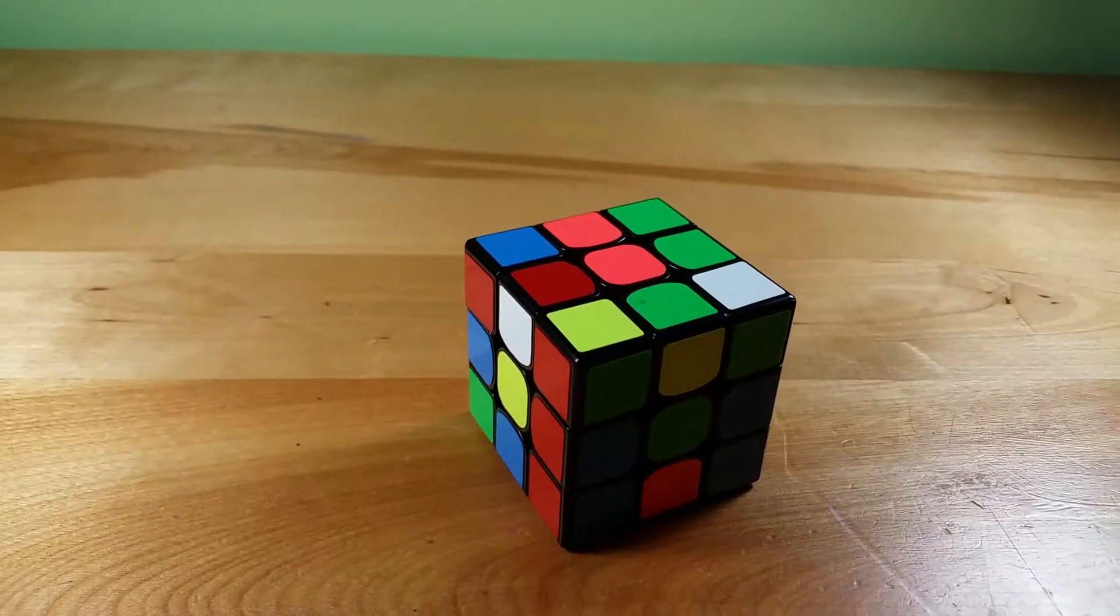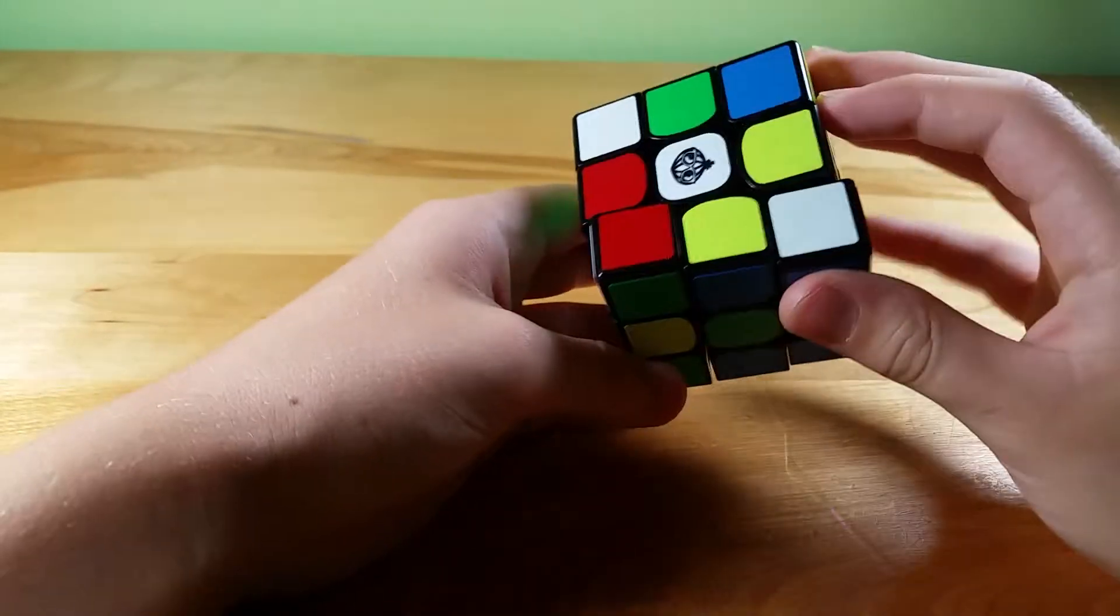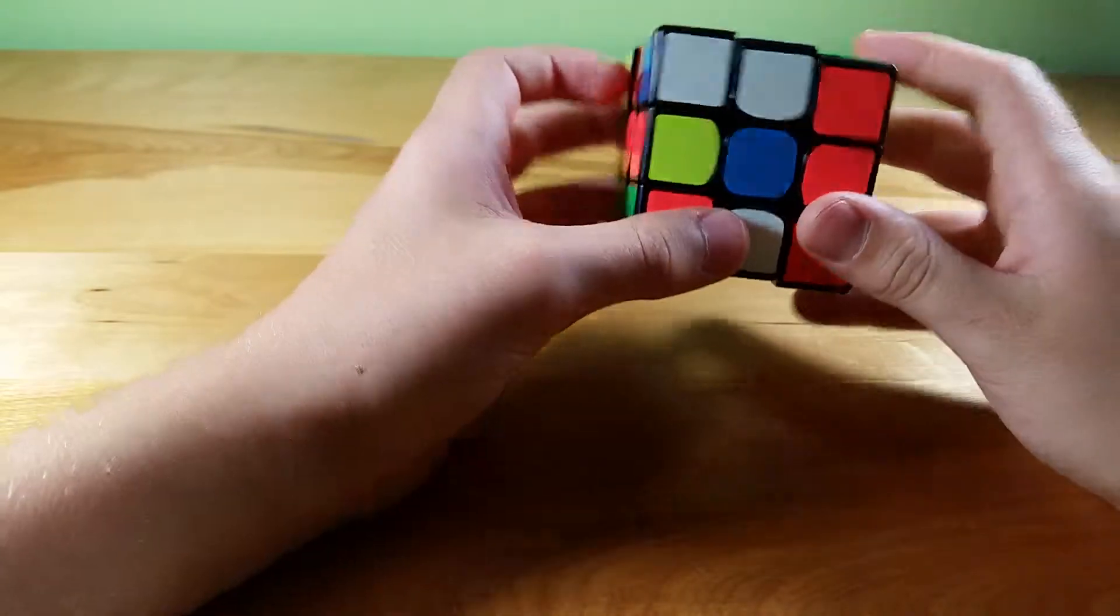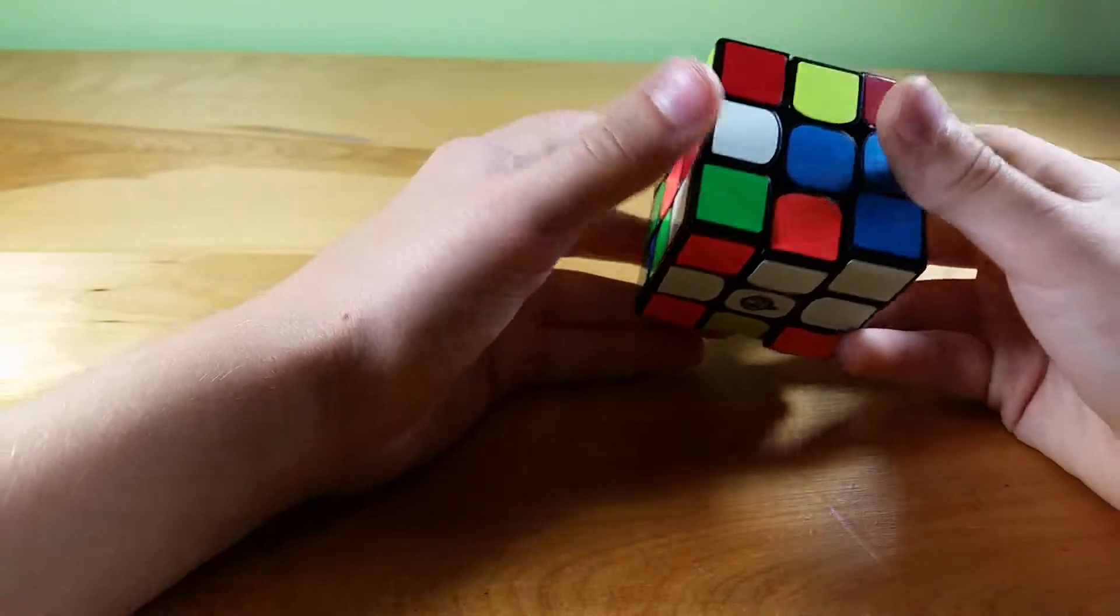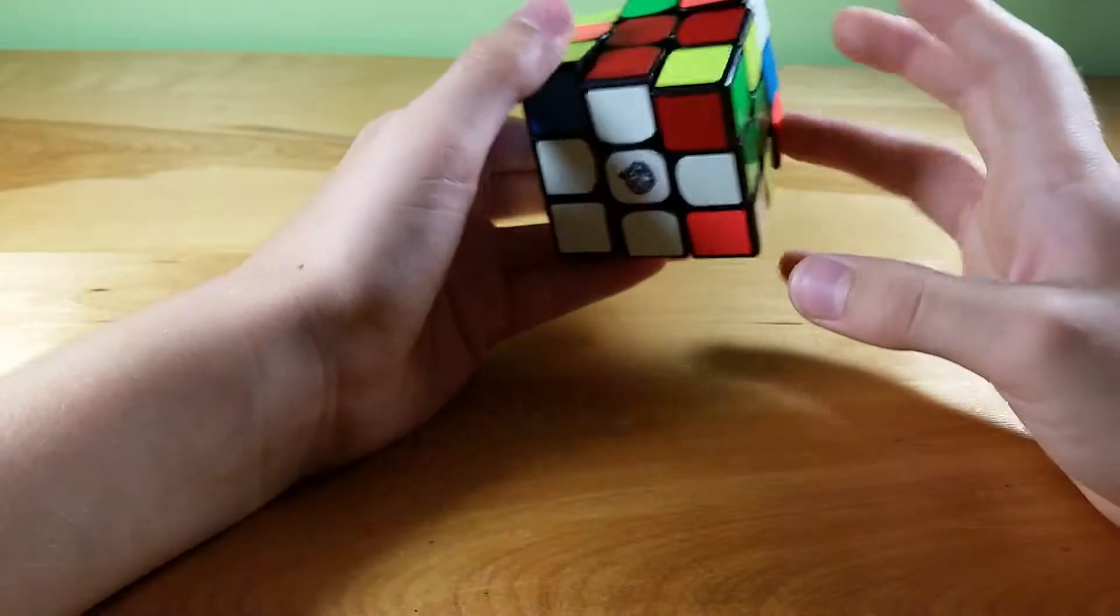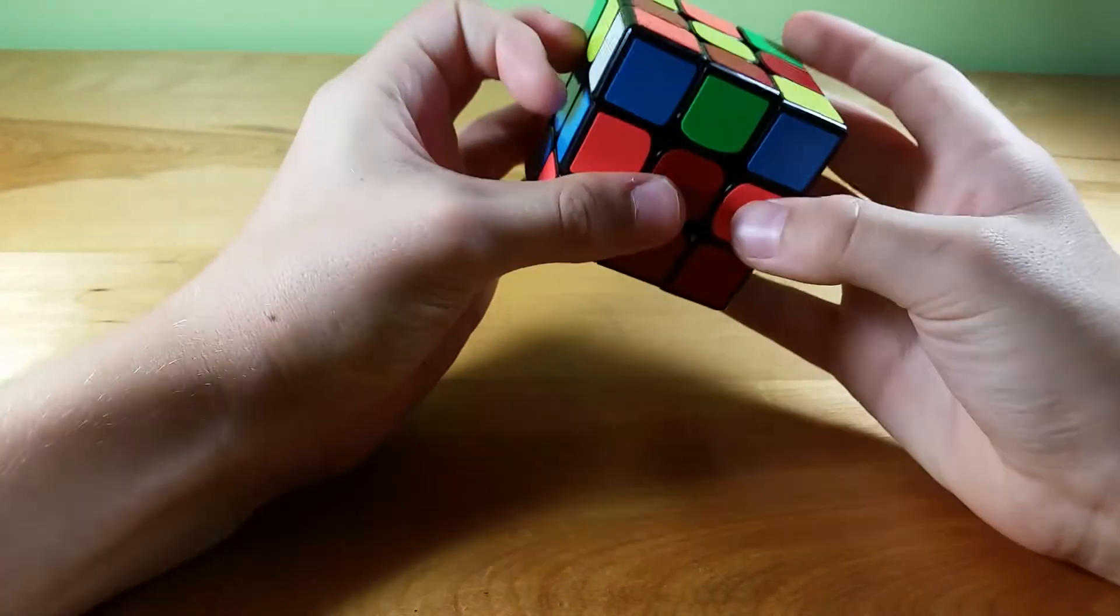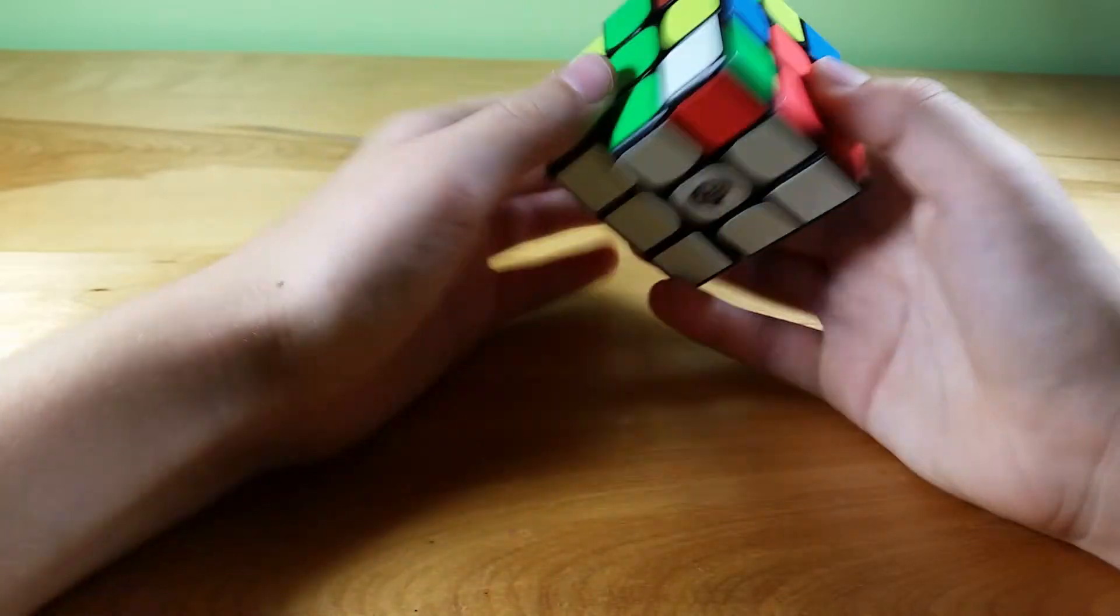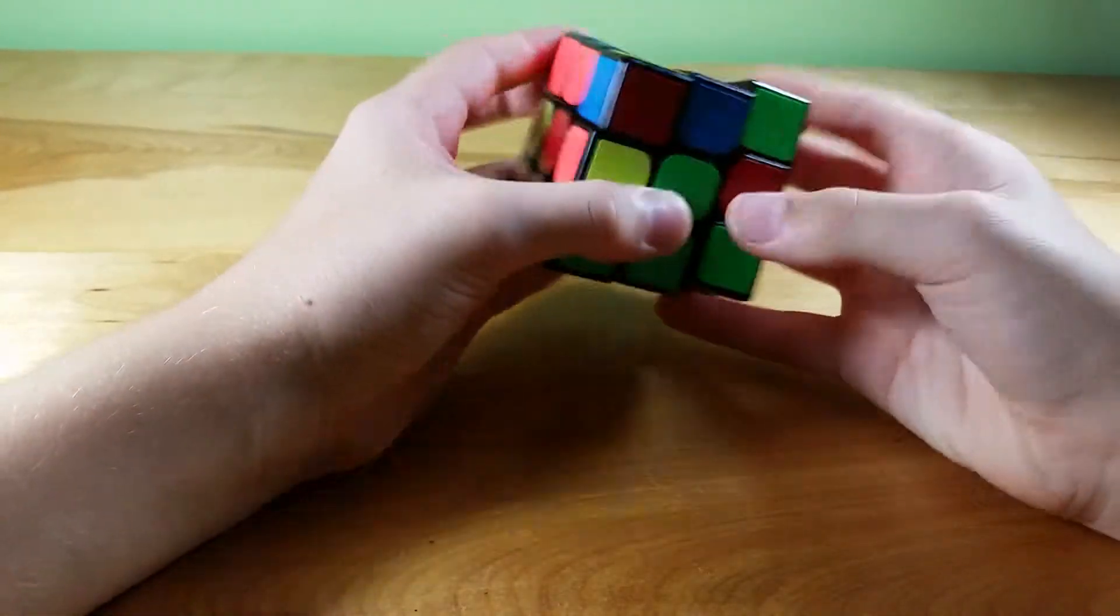Okay next scramble. Okay here we go so I think I scrambled this correctly, hopefully. Yeah I think I did. So I would probably do something like this: F R prime L and then D L D2, so that will get me the cross. And then from here this corner here R U2 R prime, this one insert in the back, this one rotate insert, and then this one like that. First edge, let's see, okay this one.